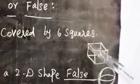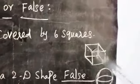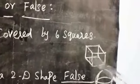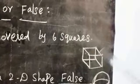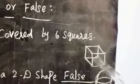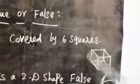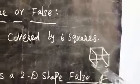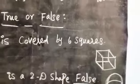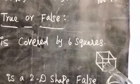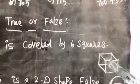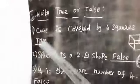The faces of a cube: one, two, three, four, five, six. How many squares does the cube shape have? Six. So the statement is true.